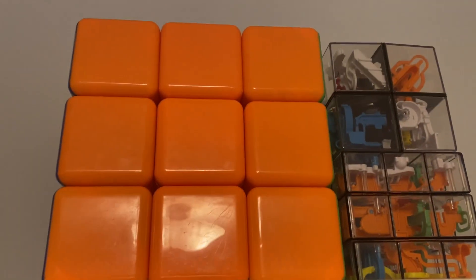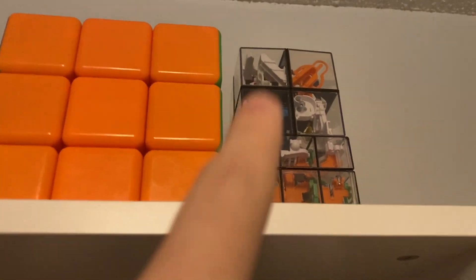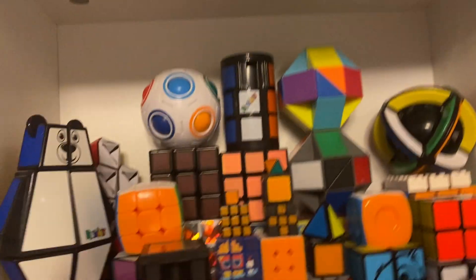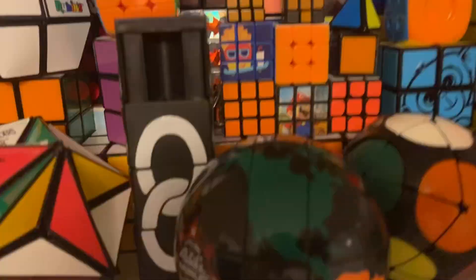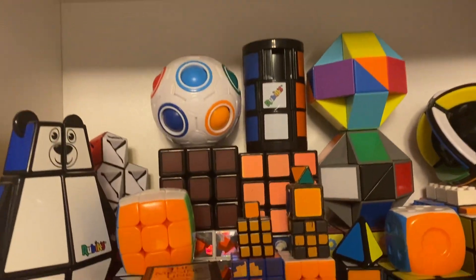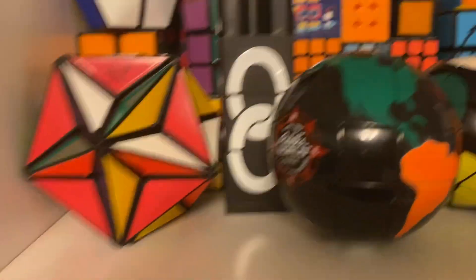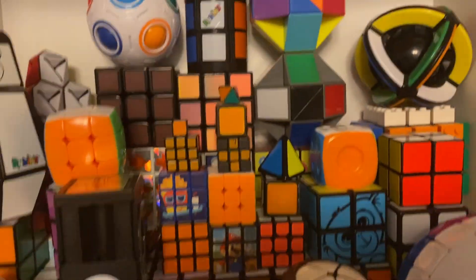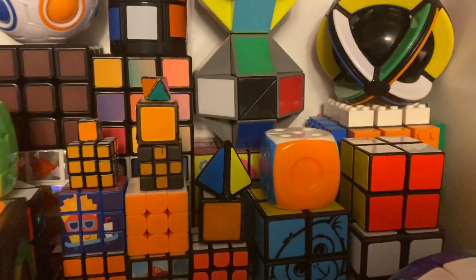Up here on top of the white shelf we got my giant 3x3, the 2x2, and 3x3 Rubik's Perplexus puzzles. Up here we got a whole bunch of puzzles. You got some Rubik's brand puzzles, some vintage puzzles, and some handmade 1x1s.